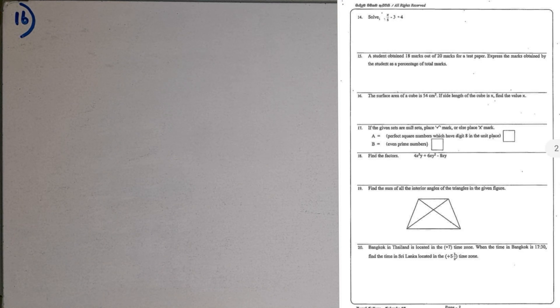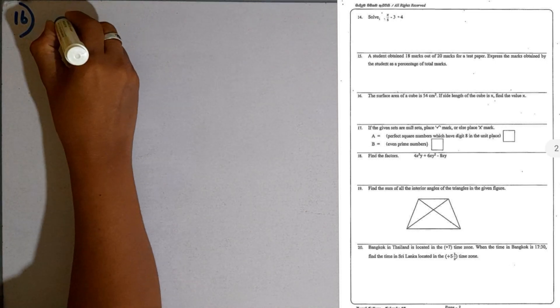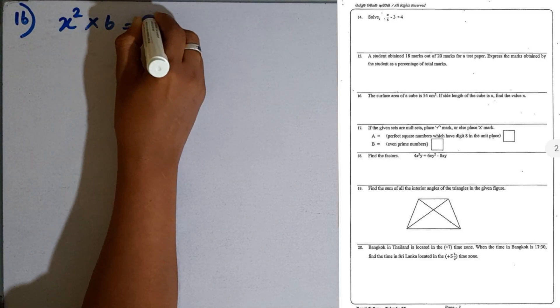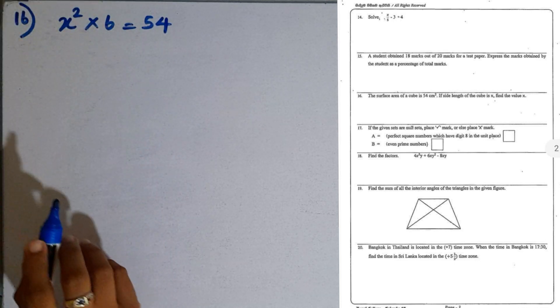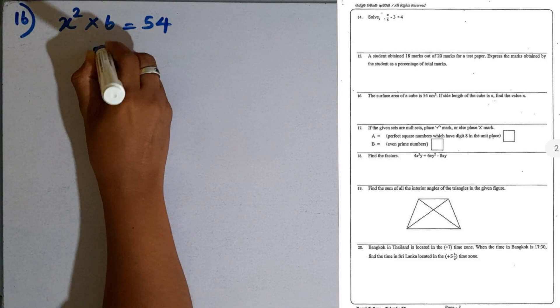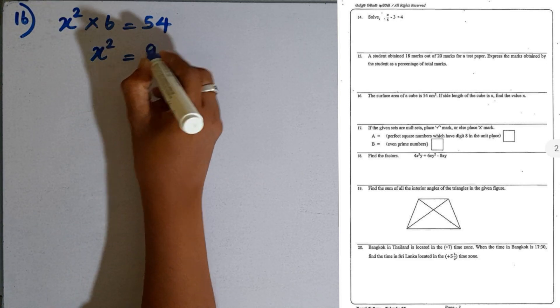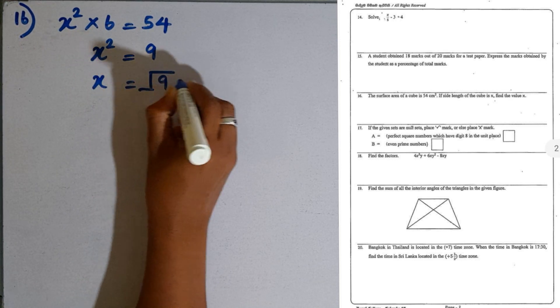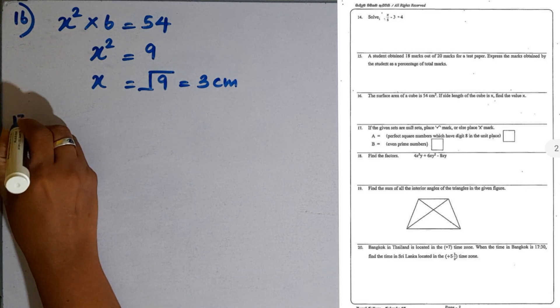Question number 16. The surface area of a cube is 54 square centimeters. If the side length is X, find the value of X. The surface area is given as 54. If you take the area of one side, that is X squared, then X squared multiplied by 6 equals 54. X squared equals 54 divided by 6, which is 9. X equals the square root of 9, which is 3 centimeters.